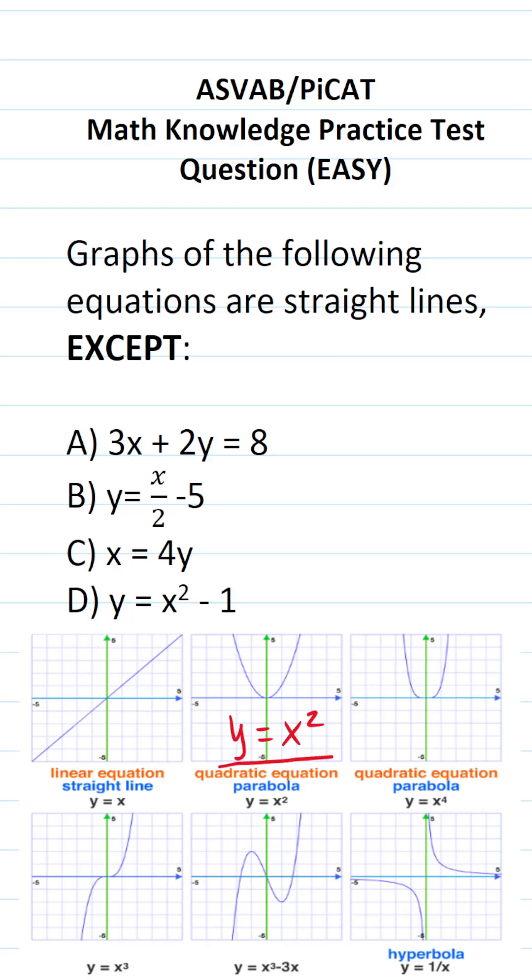For example, when we have y equals x squared, we can see that we have a parabola as our graph. When we have y equals x to the fourth, our graph looks like this. When y equals x to the third power, our graph looks like this.